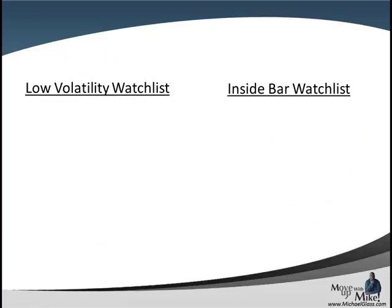As we come to our watch list, we'll first go through our low volatility using our one-hour time frame with Bollinger Bands. We have the dollar franc that we're going to be watching, and we currently do not have anything for our inside bar watch list.